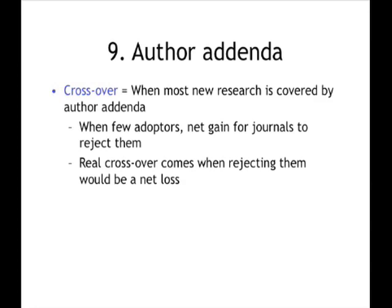There'll be a crossover when most literature is covered by author addendum — whether recommended or required by a university or funding agency. When these were new around 2004, it was very unlikely any university would require the use of one, because if only one university did, any publisher could refuse to publish that university's work with impunity. So the real crossover may come not when 51% of new research is covered by addendum, but when we've reached a critical mass such that the publisher's calculation is: we would have more to lose than to gain by rejecting this.